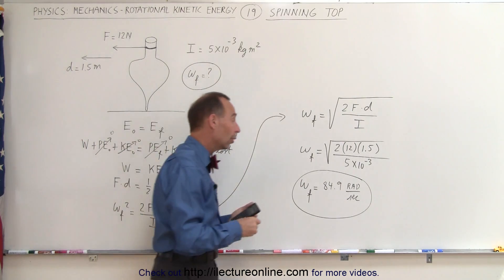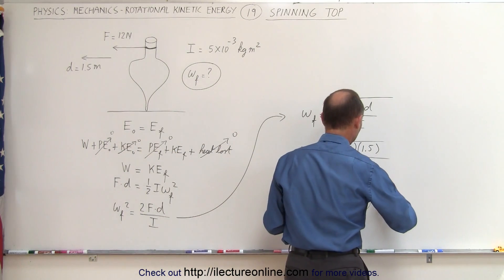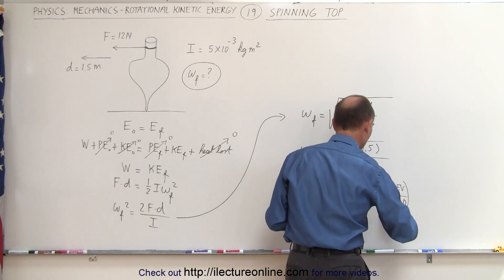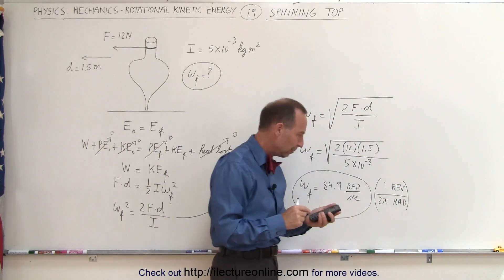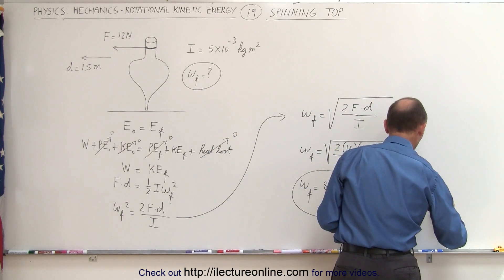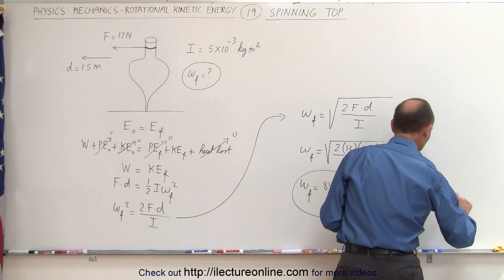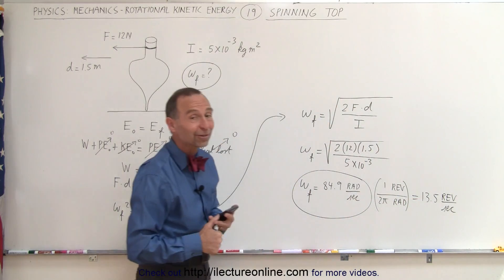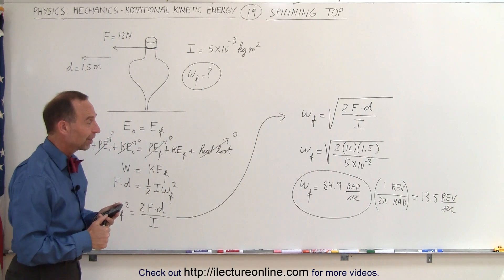If you want to know the rotational velocity, all we have to do is convert from radians to revolutions. So we have revolutions and radians at the bottom, and one revolution is 2 pi radians. So we divide this by 2 pi. And that gives us 13.5 revolutions per second, if you rather see the answer in revolutions per second rather than radians per second.